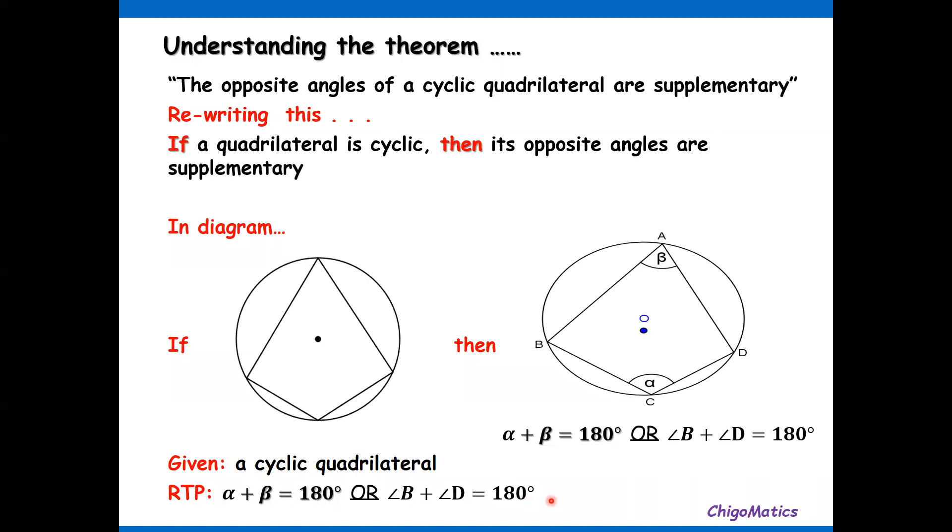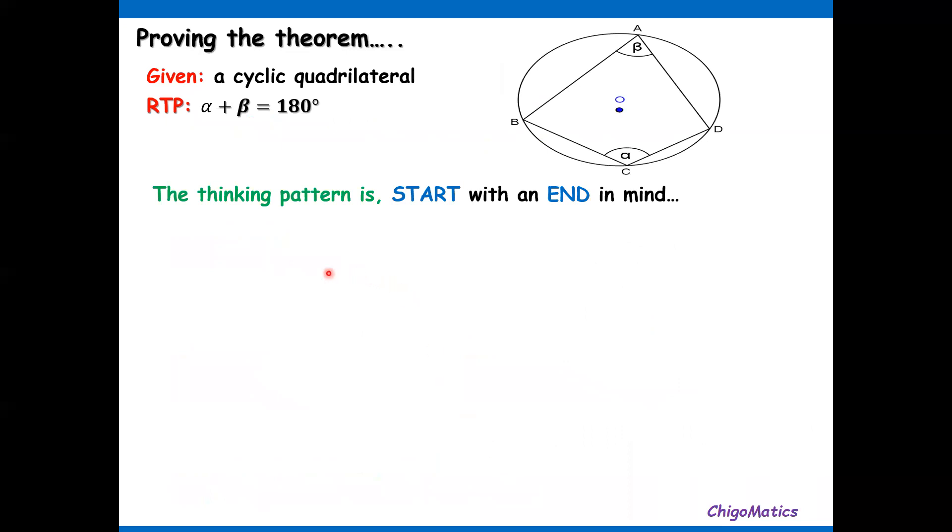But the way to prove means when you demonstrate or prove, you choose any one of the two. So we want now to demonstrate the theorem. The thinking pattern is: start with an end in mind.